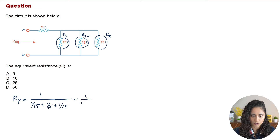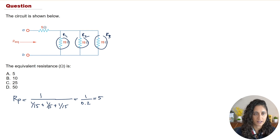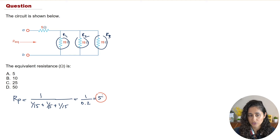If you plug those numbers into your calculator, you get 1 / 0.2, which gives you 5 ohms. This resulting 5-ohm equivalent resistor is now going to be in series with the other 5-ohm resistor. Let me draw that out so you can see it clearly.